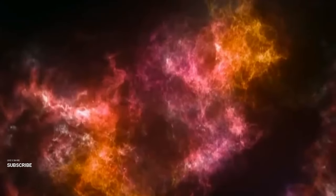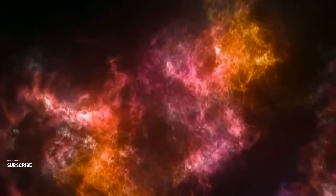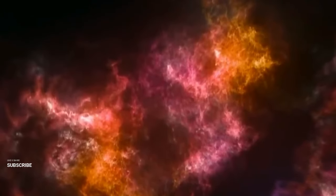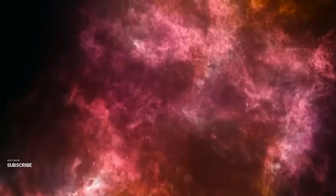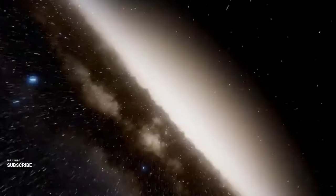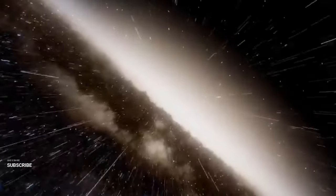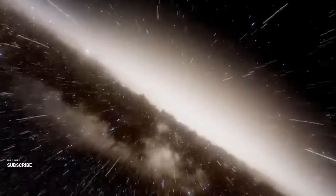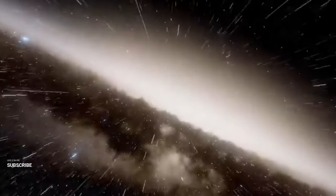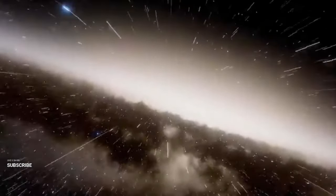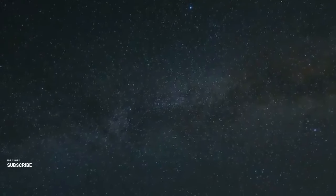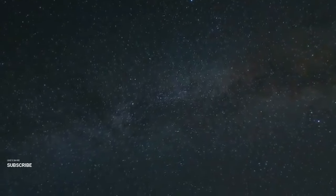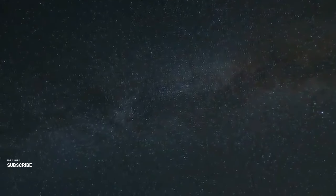The James Webb Space Telescope represents the pinnacle of human ingenuity and technology. Its primary mirror is composed of 18 hexagonal segments made of beryllium coated with a thin layer of gold to optimize infrared reflection. This powerful combination allows JWST to capture light from the most distant and ancient objects in the universe, making discoveries like the anomalous galaxies possible.